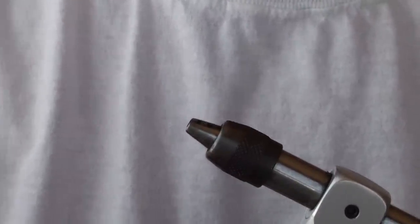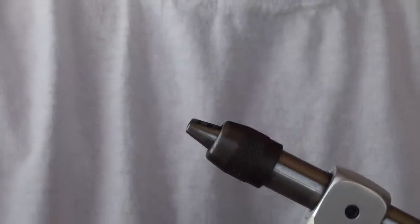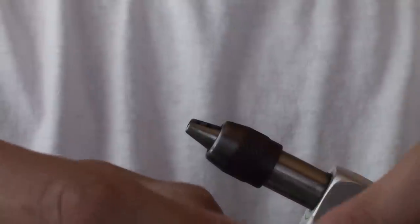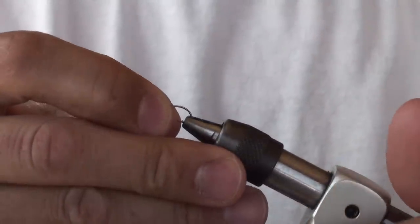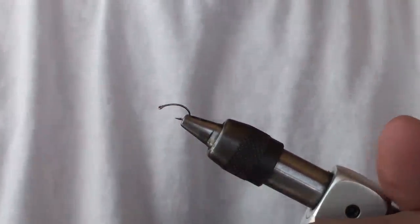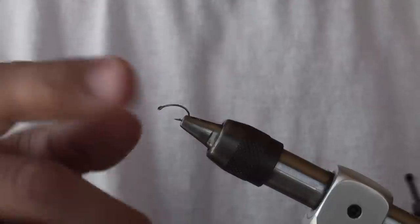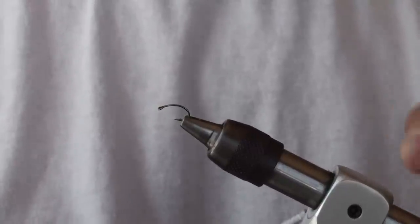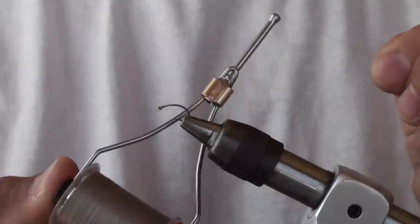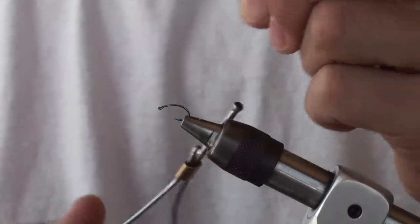Today I'm going to be tying a number 14 bluing olive hackle stacker. I decided there were enough Adam's patterns on YouTube, so I decided I'd put something a little bit different to be more helpful for some of you. I'll begin by putting the hook in the vise and I'm using brown or olive gray ADOT thread.